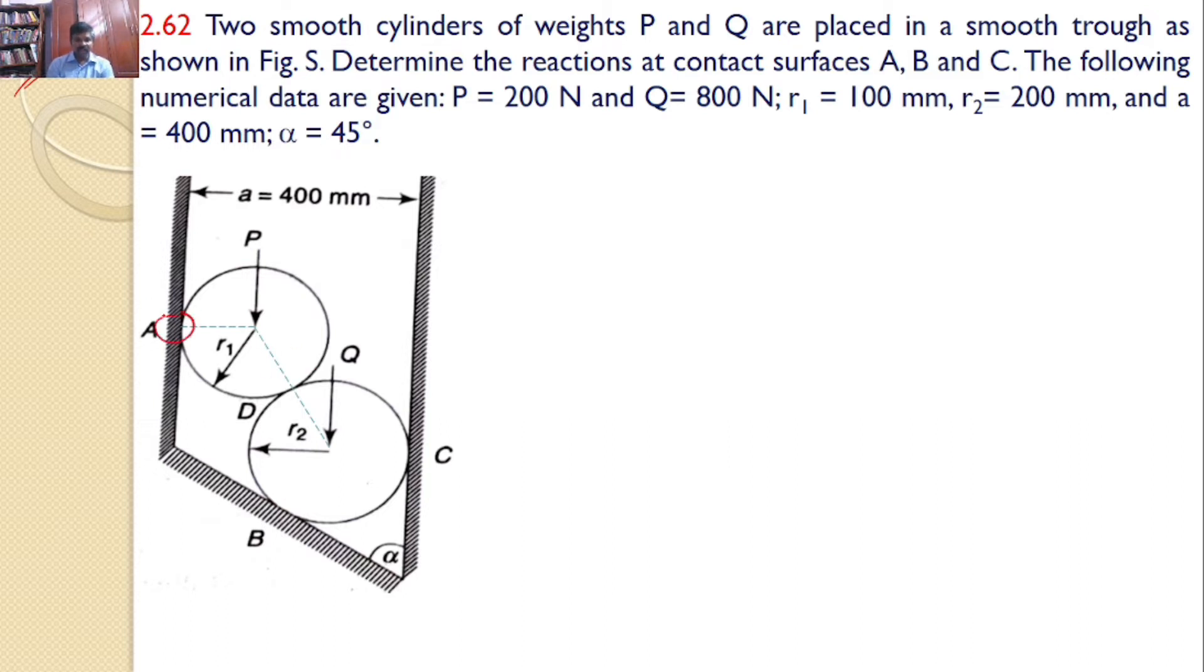Now, our interest is to find the reaction at A, B, and C. So, let us take roller by roller. First, let us consider the roller A.